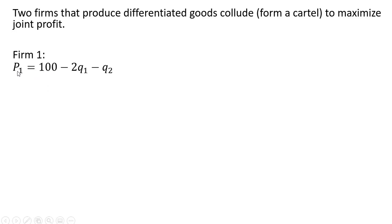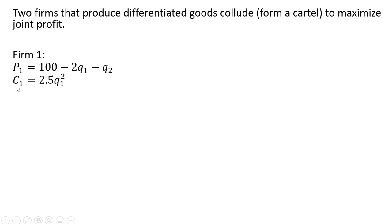Firm 1 has the inverse market demand that looks like this. Q subscript 1 is Firm 1's output, Q subscript 2 is Firm 2's output. And Firm 1's total cost of production is given as follows.